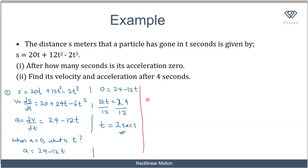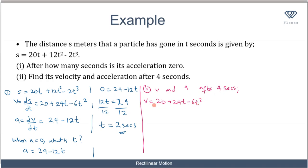Moving on to part b, we need to find the velocity and acceleration after 4 seconds. Using the velocity function v = 20 + 24t - 6t², we substitute t = 4: v = 20 + 24(4) - 6(4²) = 20 + 96 - 96 = 20 meters per second.